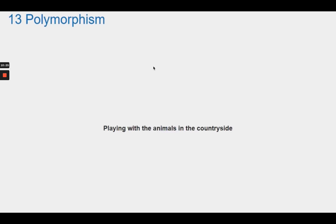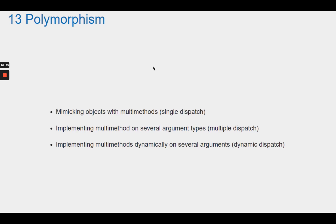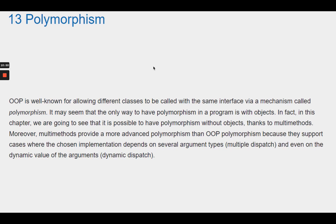Chapter 13: Polymorphism — Playing with the animals in the countryside. OOP is well known for allowing different classes to be called with the same interface via polymorphism. This chapter shows that polymorphism is possible without objects, thanks to multi-methods. Multi-methods provide more advanced polymorphism than OOP, supporting cases where the chosen implementation depends on several argument types — multiple dispatch — and on the dynamic value of arguments — dynamic dispatch.